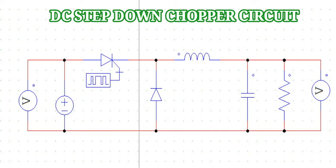In this circuit I am using GTO instead of SCR as a switch, because in case of SCR, if you use SCR with a DC circuit then you need a forced commutation circuit to turn it off. But we don't need to use a forced commutation circuit to turn off a GTO.